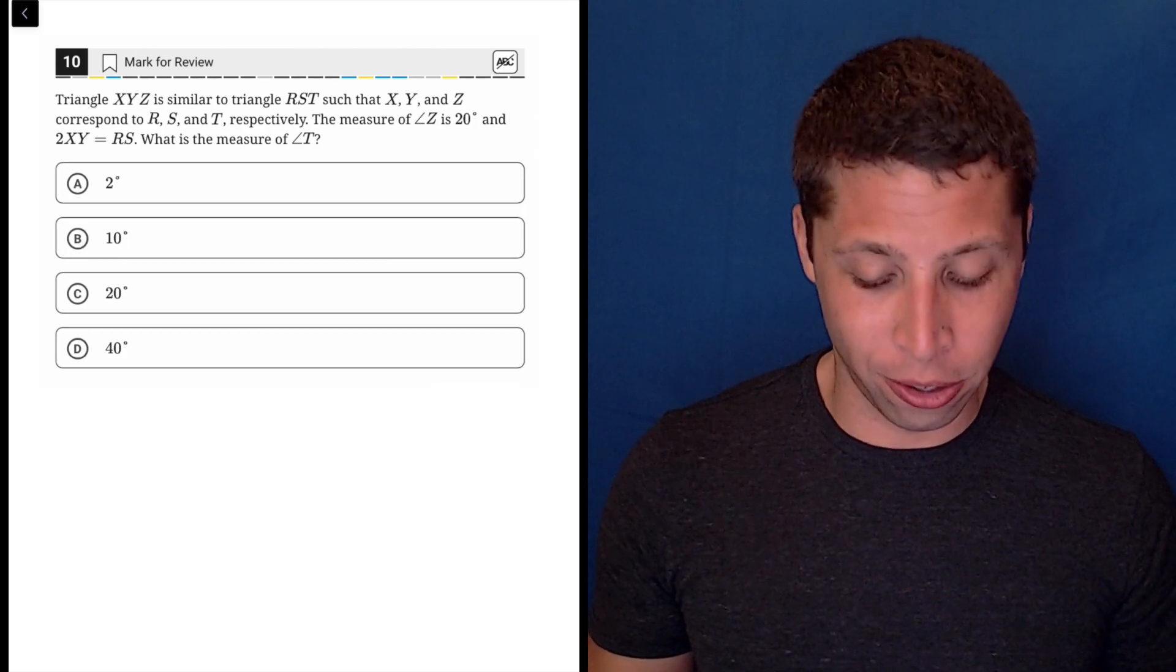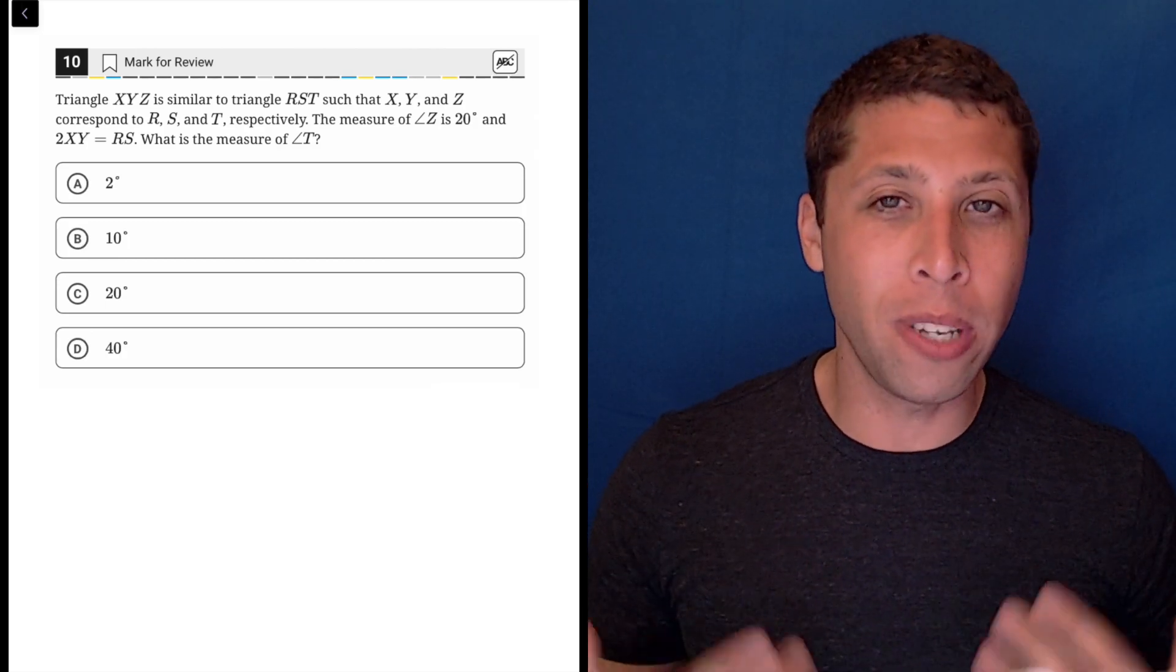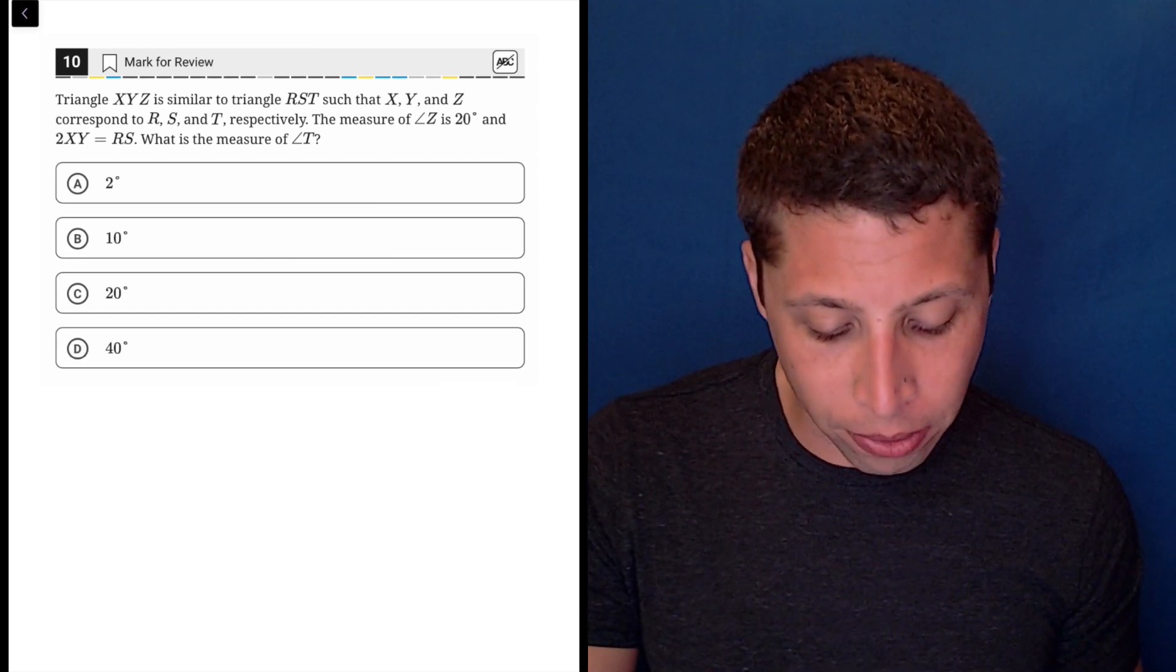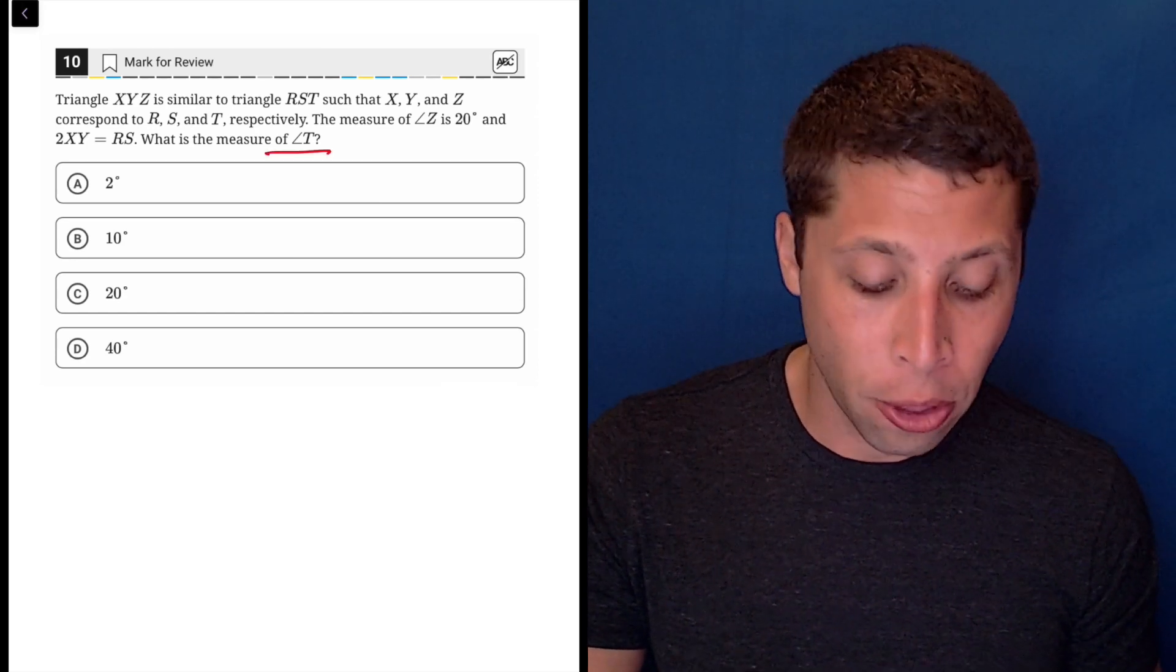All right, when they're asking about similar triangles, we often don't need to draw two separate triangles, especially because in this case they're not really asking anything about the side lengths, they're asking about the angles.